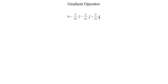The way that this works is you have a scalar function, and then you take the derivative of that scalar function with respect to x, and plug that in for this term to get the i-hat component of the gradient. Then you take the derivative with respect to y of that scalar function and plug that into the j-hat component of the gradient vector. Then take the derivative with respect to z of that scalar function and plug that in for the vertical component of the gradient vector.